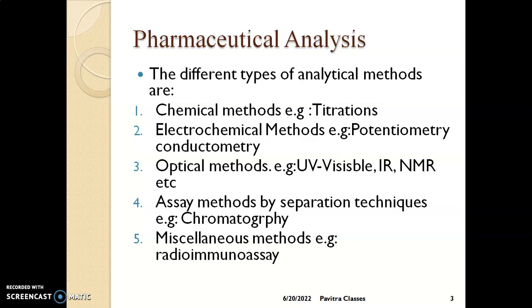The third method is the optical method, using instrumentation such as UV-Visible spectrometers, IR infrared spectroscopy, and NMR. The sample is passed through optical light — which may be scattered, diffracted, or emitted — and the signals generated by the light are read out from a chart to perform the analysis.